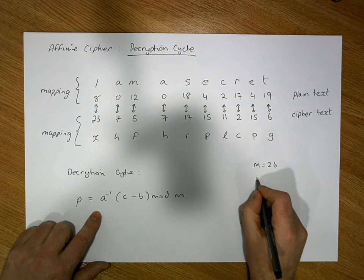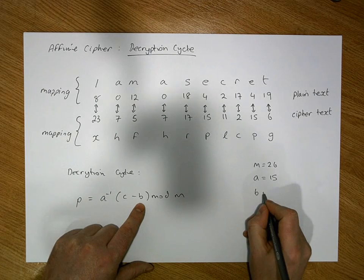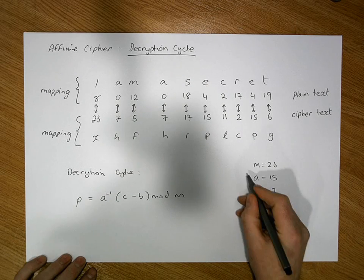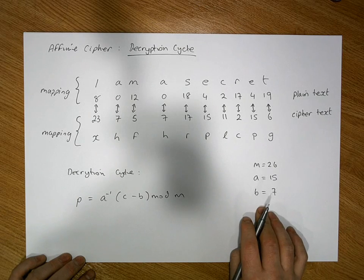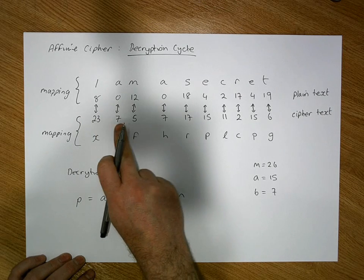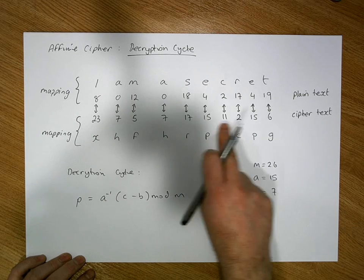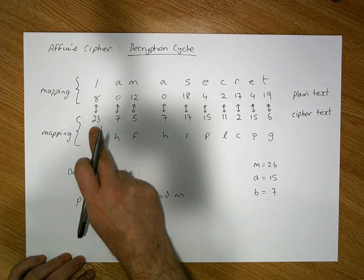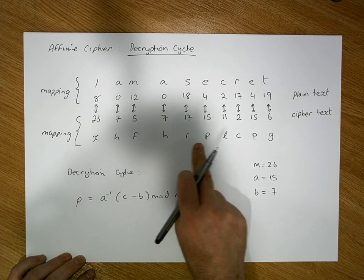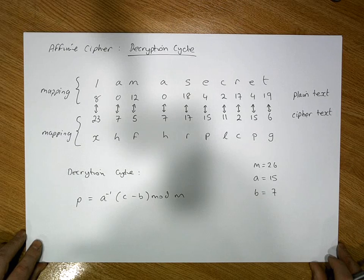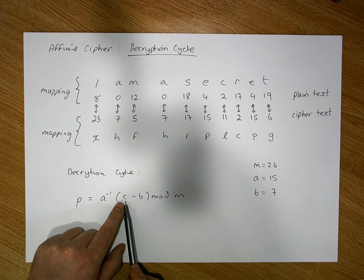We had previously decided on the value of a, which was equal to 15, and the value of b, which was equal to 7. With these three values we passed them into the encryption algorithm to give us our corresponding cipher text numbers — each number representing a particular character, which we looked up on our template to give us the actual cipher text character.